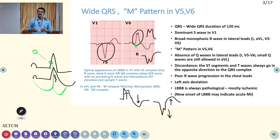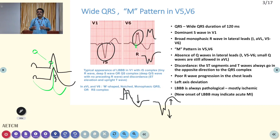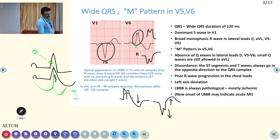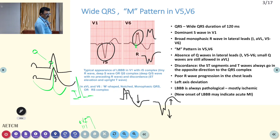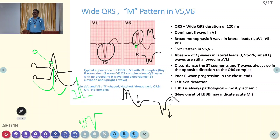Poor R wave progression in the chest leads — from V1 to V6, the R wave progression is very minimal. There is also left axis deviation: in lead 1, the QRS will be positive, whereas AVF will be negative. This is left axis deviation and is the easiest finding to identify from the ECG.